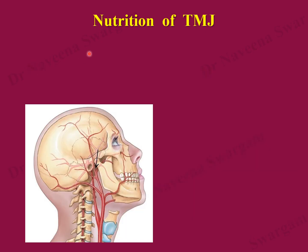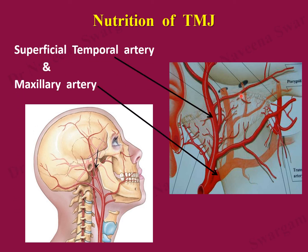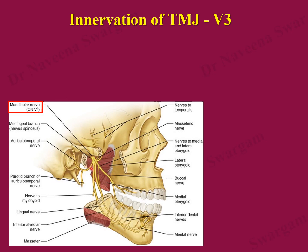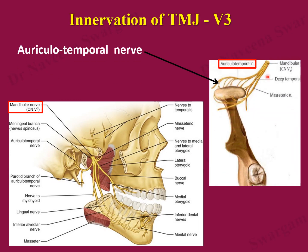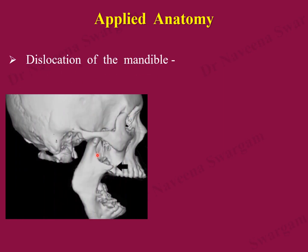Arterial supply to the joint is derived from the external carotid artery through its two terminal branches: the superficial temporal artery and the maxillary artery, which supply the joint through their articular branches. Nerve supply is derived from the mandibular division of the trigeminal nerve through two branches: the auriculotemporal nerve through its posterior division, and the masseteric nerve through its anterior division.